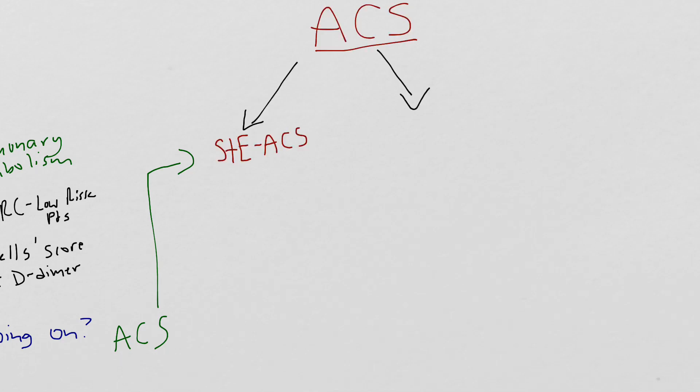Acute coronary syndrome is divided into two main categories: ST elevation ACS and non-ST elevation ACS. Non-ST elevation ACS is further subdivided into NSTEMI and unstable angina. What we're trying to get at is understanding what's going on at the level of the coronary artery. However, outside of a cath or an angiogram, we don't really have a way to look at what's going on at the coronary arteries.